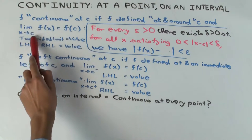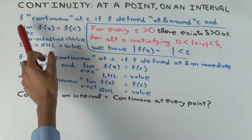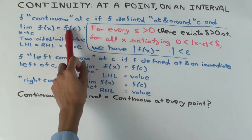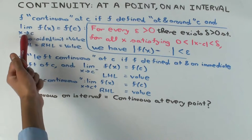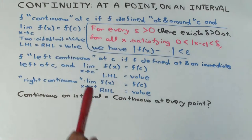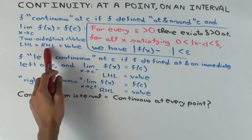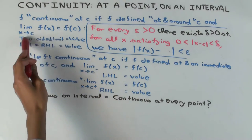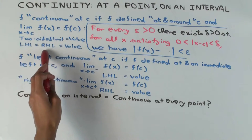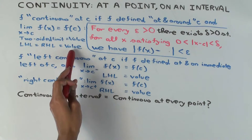For the limit as x approaches c of f(x) to make sense, f has to be defined on the immediate left and right, and for f(c) to make sense, f has to be defined at c. Another way of saying this is that the two-sided limit — which is just the ordinary limit — has to equal the value. Or equivalently, the left-hand limit, right-hand limit, and value all three have to be equal to each other. If just the left-hand limit and right-hand limit are equal, you say the function has a limit at the point, but without knowing whether it equals the value, you cannot comment on continuity.